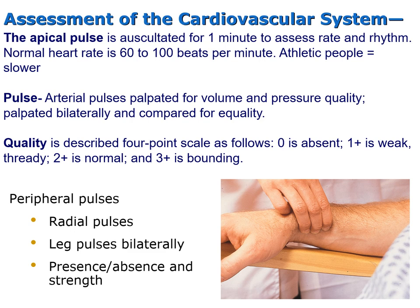A normal heart rate is 60 to 100 beats per minute; in athletic people, the rate may be a bit slower. Arterial pulses are palpated for volume and pressure quality, palpated bilaterally and compared for equality. Equality is described on a four-point scale: zero represents absent, one-plus represents weak and thready, two-plus is normal, and three-plus represents full and bounding. We assess all peripheral pulses — radial pulses and leg pulses bilaterally — checking for presence versus absence and strength.